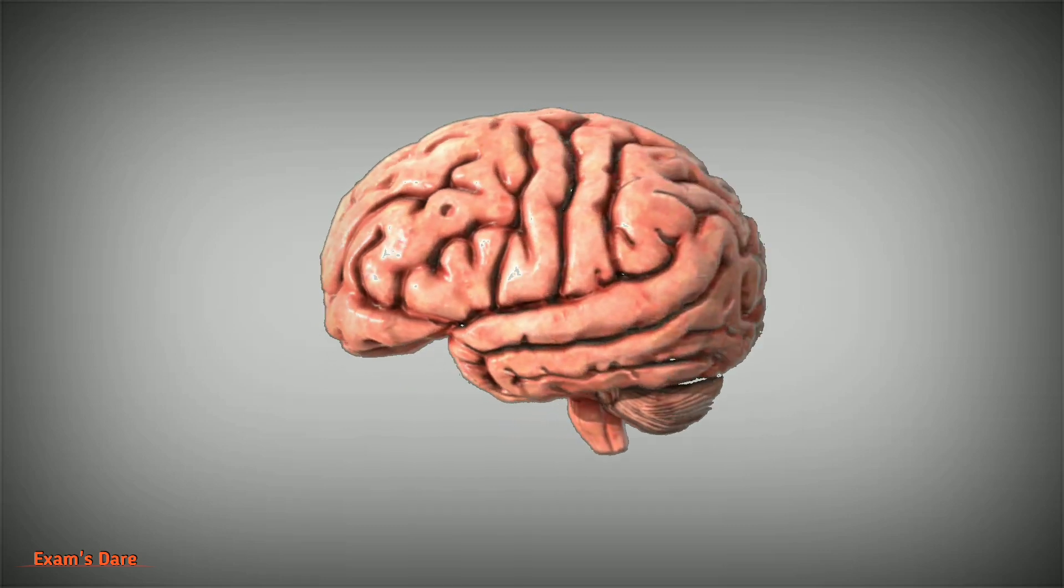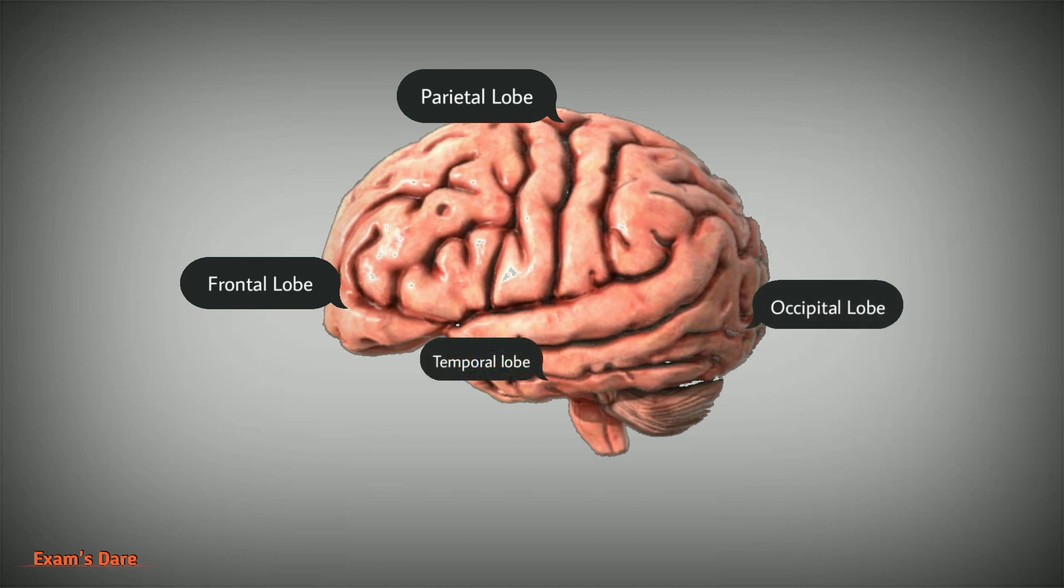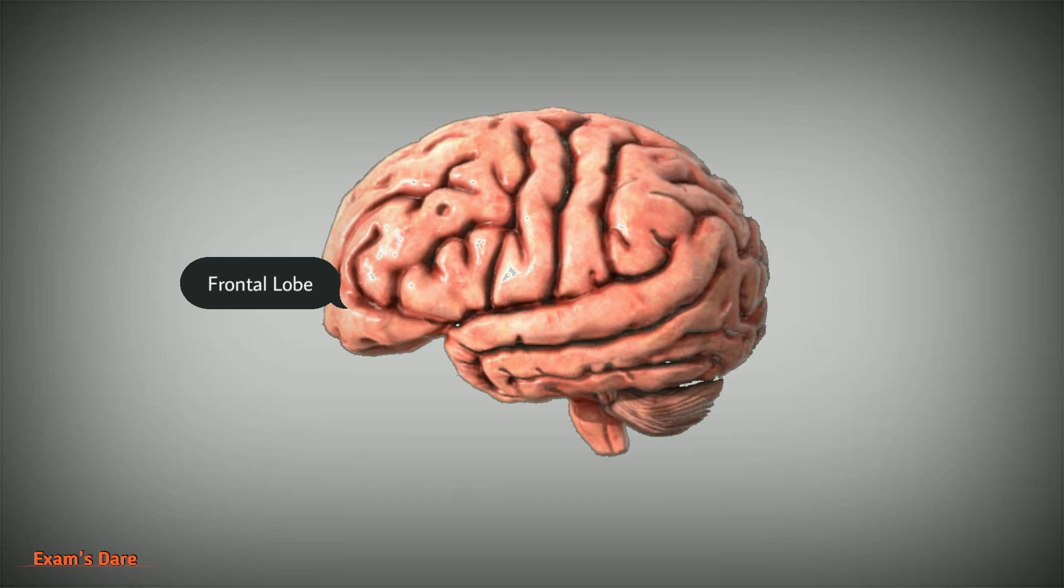Each hemisphere has four lobes: frontal, parietal, occipital, and temporal. Frontal lobe is the most anterior portion of cerebrum. It is responsible for voluntary motor activity, decision-making, and problem-solving.